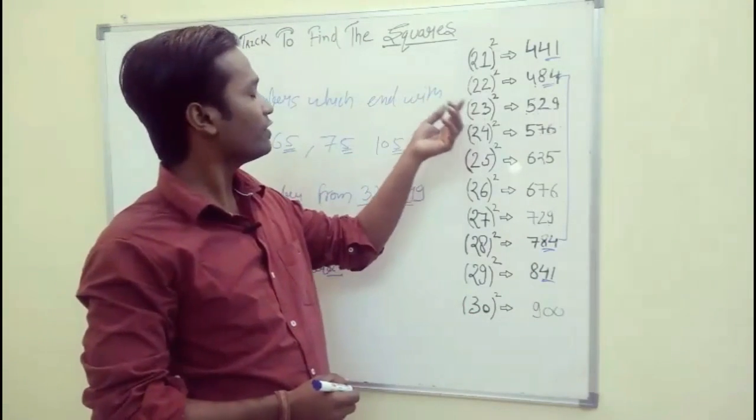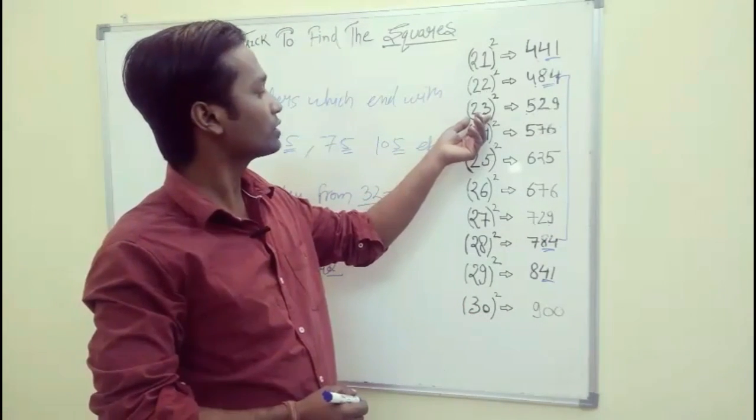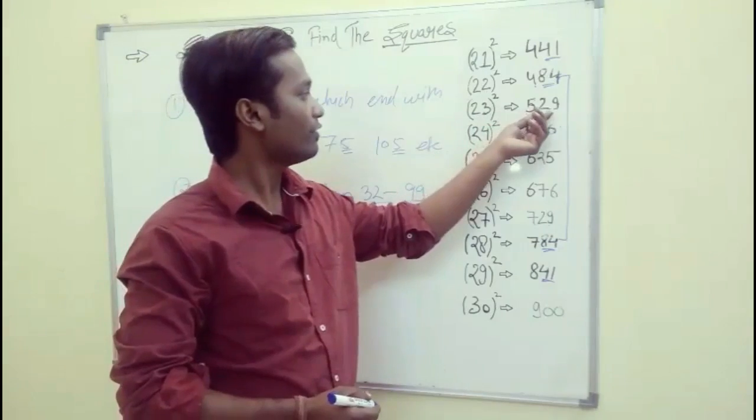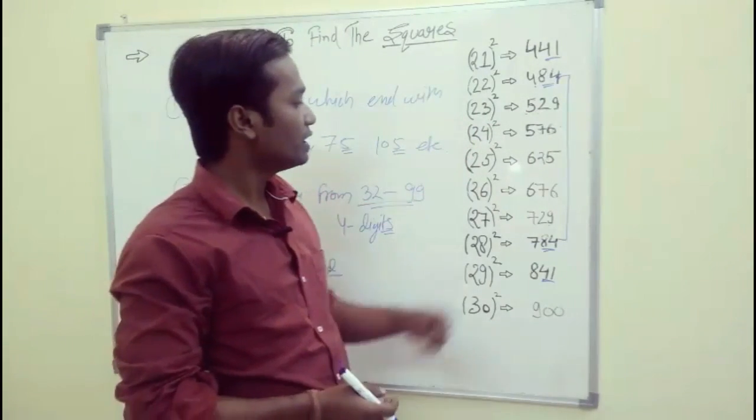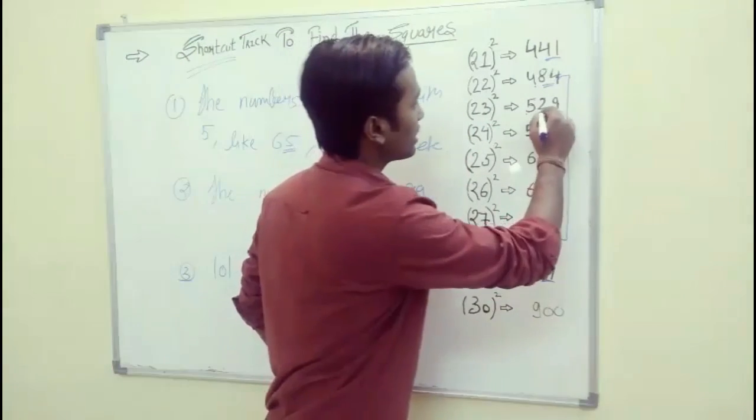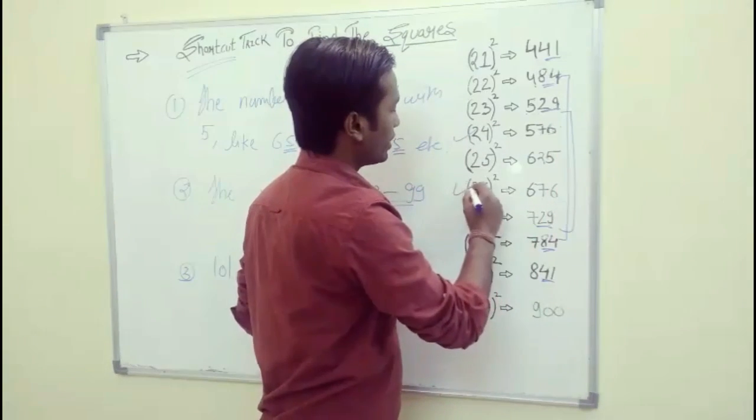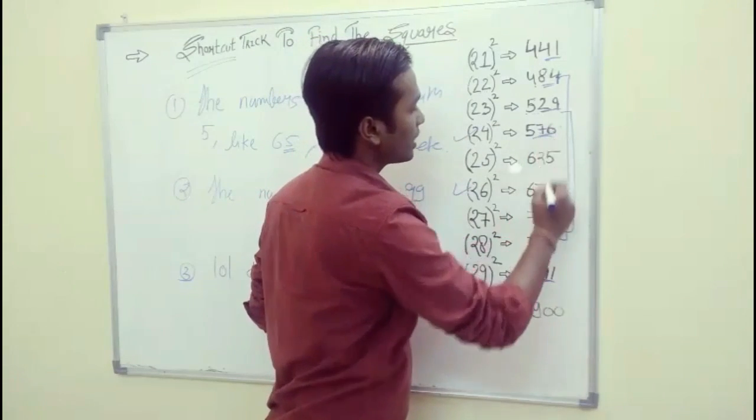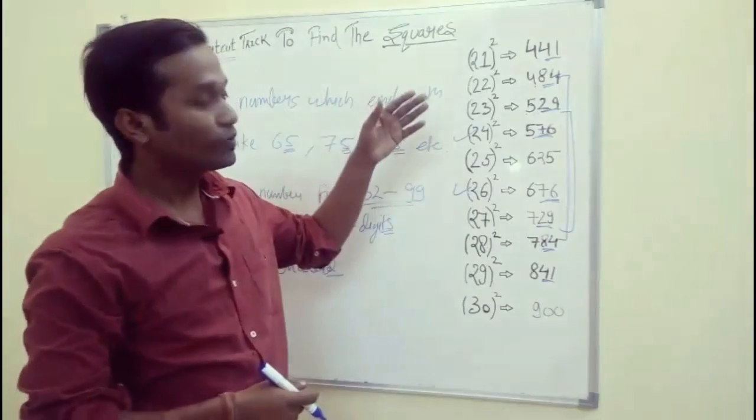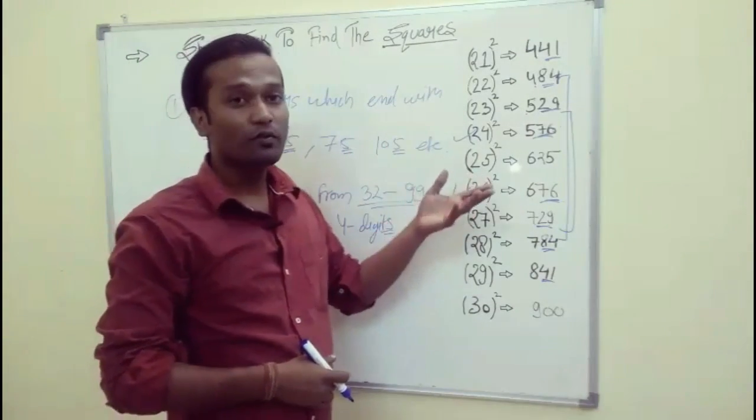If we talk about the square of 23 is 529 and the square of 27 is 729. Again, the last two digit numbers are same. Same pattern follows in 24 and 26. Again, the last two digit numbers are same. So this is the trick. We can learn very easily in this way.